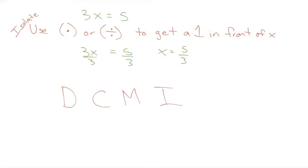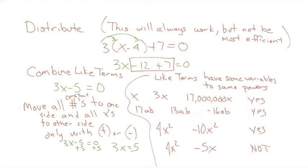When you hear me talk about what we're doing in class, those letters — D, C, M, I — represent: distribute, combine, move, and isolate. Any chance you have to combine like terms on the same side of an equation, you can do that over and over again. You may end up having to do it multiple times to solve the problem.